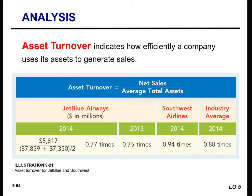Asset turnover is a ratio that indicates how efficiently a company is using its assets to generate sales — how many dollars of sales are generated by each dollar invested in assets. This ratio is computed by dividing net sales by average total assets. Average total assets is assets at the beginning of the period plus assets at the end of the period, divided by two. When comparing two companies in the same industry, the one with the higher asset turnover ratio is operating more efficiently, generating more sales per dollar invested in assets.